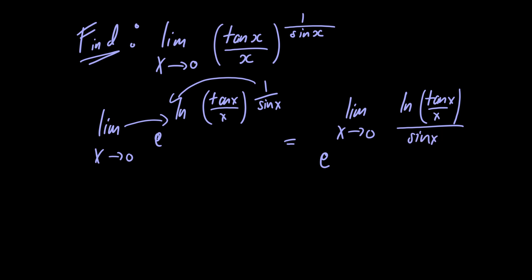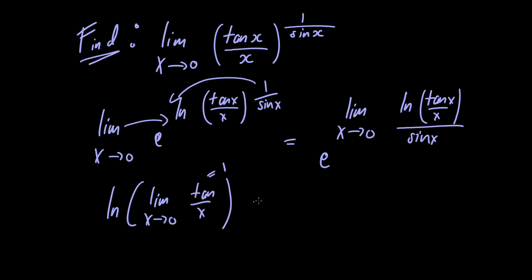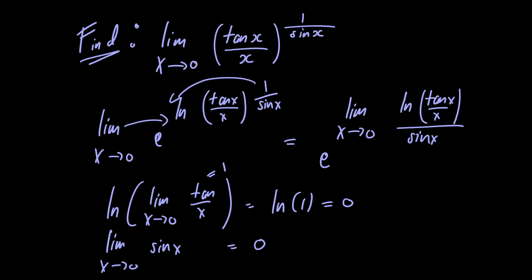Now if we evaluate the limit inside the exponential function, in the numerator we would have the natural logarithm of the limit as x approaches 0 of tangent of x divided by x. This limit equals 1, so we have the natural logarithm of 1, which equals 0. In the denominator we have the limit as x goes to 0 of sin of x, which is just 0. So we have a limit of the form 0 over 0.